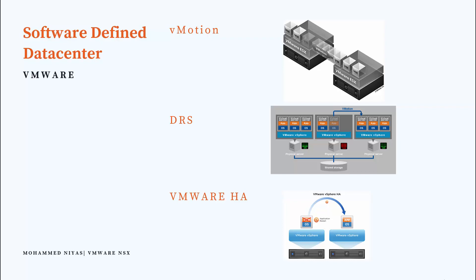So vMotion, DRS, and HA — these are really the foundations of what we know today as software-defined data center technology. A software-defined data center is really about leveraging the intelligence in software, and that eliminates the need for a person to have to do something manually. So if my data center is dealing with DRS, I don't have to have a person sitting and monitoring the infrastructure and manually moving those workloads. Those are the compute virtualization elements which brought tremendous changes in the compute data center environment, and we have all been enjoying these capabilities to manage our compute resources.